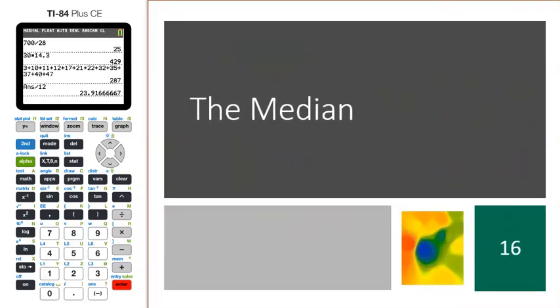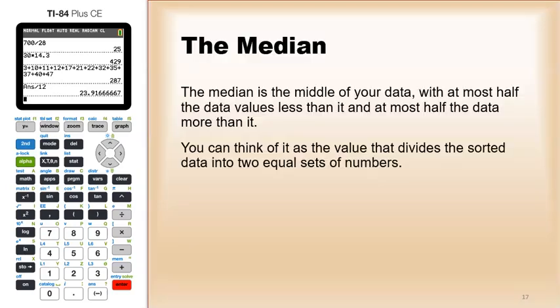Okay, so let's talk about the median now. The median is the middle of your data - you sort your data from smallest to largest, and the number that's in the middle is called the median. You can think of it as the value that divides your sorted data into two equal sets of numbers.